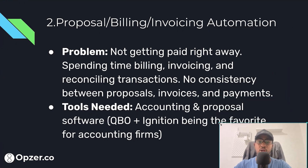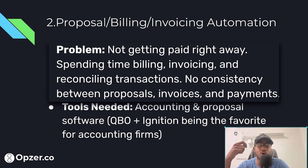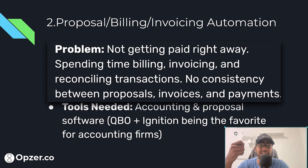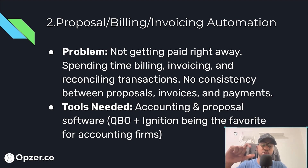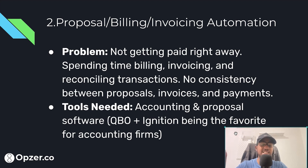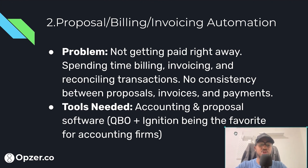Automation number two: proposals, billing, and invoicing. The problem we're trying to solve is that you don't get paid right away. I've had clients in the accounting firm space who start working without having clients pay first, and then the client backs off and you've already incurred costs without receiving revenue. The point is not to spend time manually billing, invoicing, and reconciling transactions, but to have consistency between your proposal, invoice, and payment.